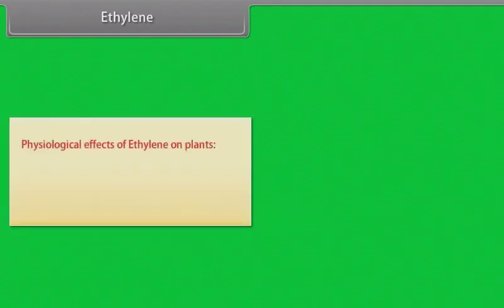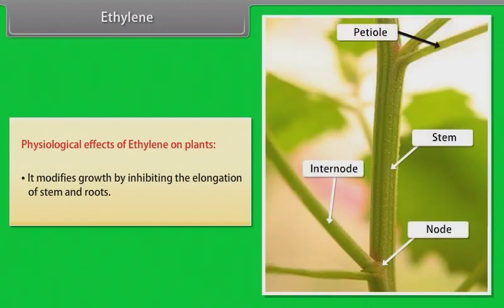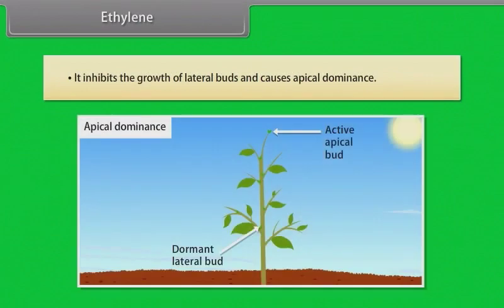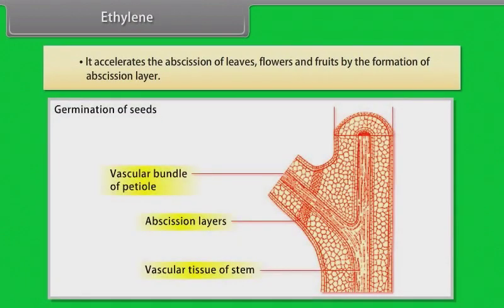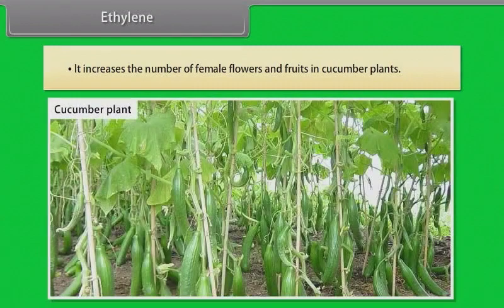Ethylene: Physiological effects of ethylene on plants — it modifies growth by inhibiting the elongation of stem and roots. It inhibits the growth of lateral buds and causes apical dominance. It accelerates the abscission of leaves, flowers and fruits by formation of the abscission layer. It retards flowering in most plants but induces flowering in pineapple, mango and many other plants. It increases the number of female flowers and fruits in cucumber plants.